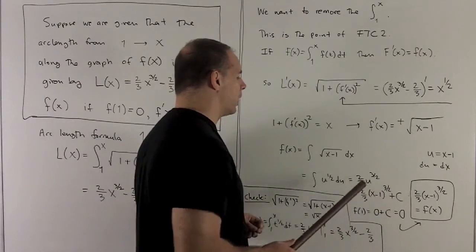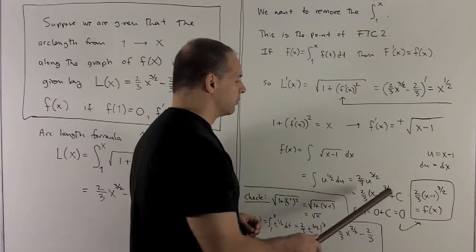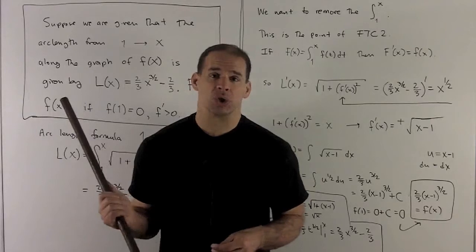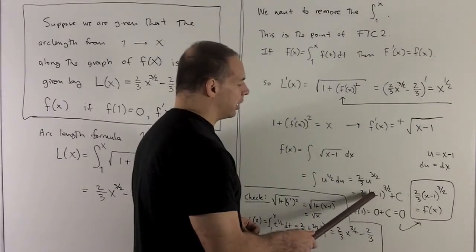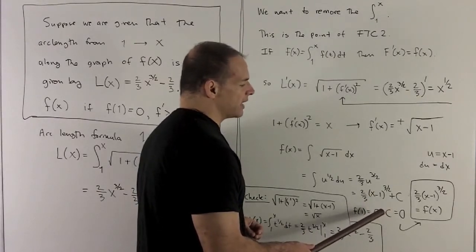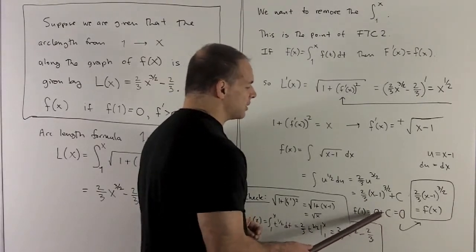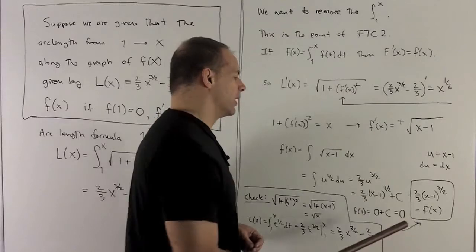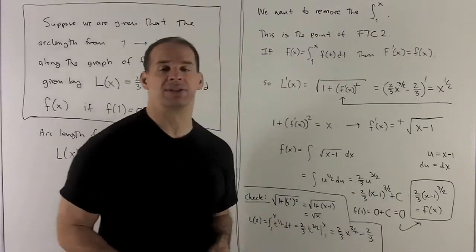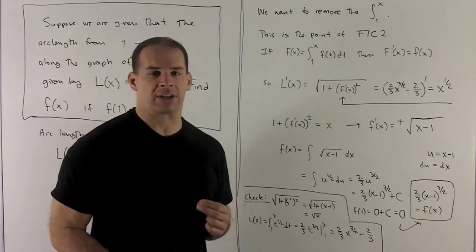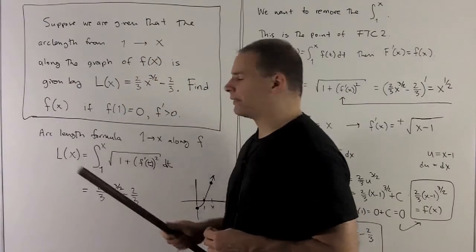Once I get rid of c, we'll have things nailed down. To get rid of c, we note we're also assuming f(1) = 0. So if I put 1 in here, that's going to give me 0 + c. But we're assuming that's going to be equal to 0. So c has to be equal to 0. And what I'm left with is f(x) = 2/3 (x - 1)^(3/2). That's our f(x) that goes with this length function.